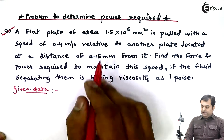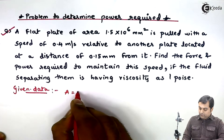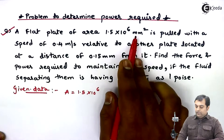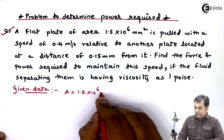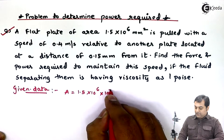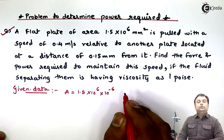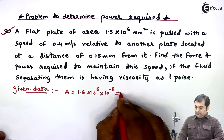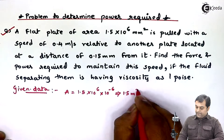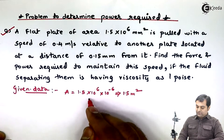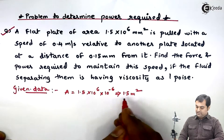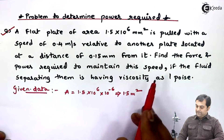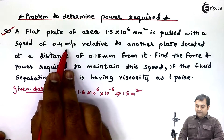I'll write the data here. The flat plate area A is equal to 1.5 × 10⁶ mm². I'll multiply it by 10⁻⁶ to convert to meter square, so this becomes 1.5 m². The 10⁶ and 10⁻⁶ cancel out, so I have converted mm² area into m².